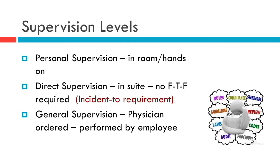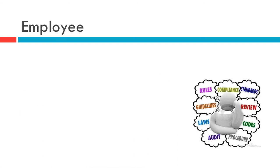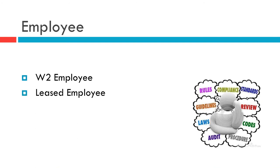There are three different supervision levels. Personal supervision means the doctor has hands-on and is in the room with the patient. Direct supervision means the doctor is in the suite, but no face-to-face is required — the doctor does not have to be in the same room as the patient. General supervision means the physician ordered it and it can be performed by any employee.